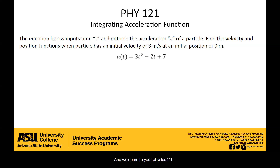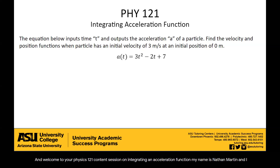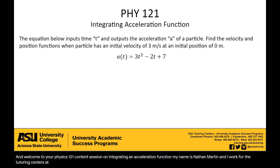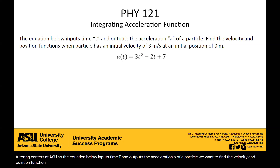This is our Physics 121 content session on integrating an acceleration function. My name is Nathan Martin, and I work for the tutoring centers at ASU. The equation below inputs time t and outputs the acceleration a of a particle. We want to find the velocity and position functions when acceleration has an initial velocity of 3 meters per second at an initial position of 0 meters.